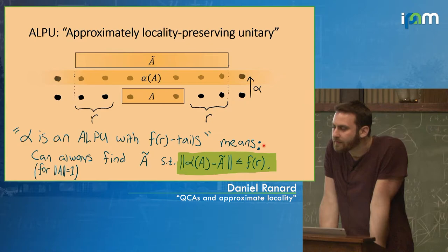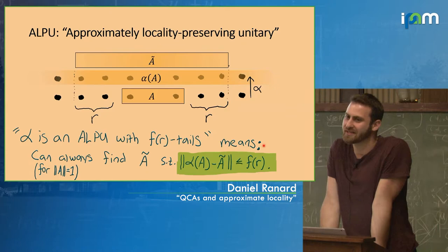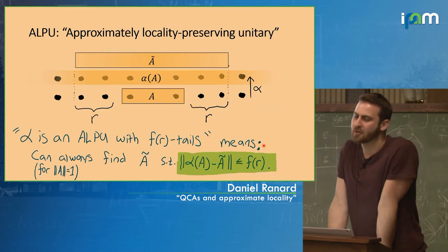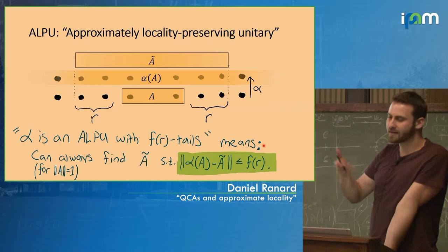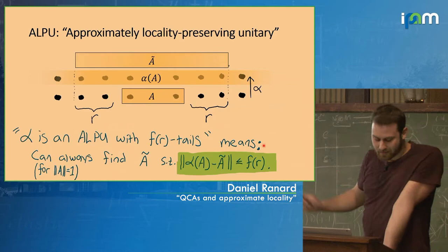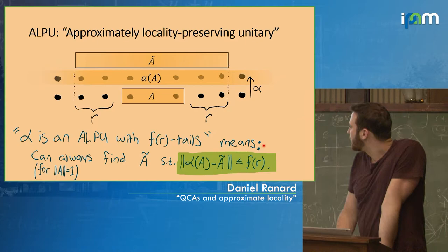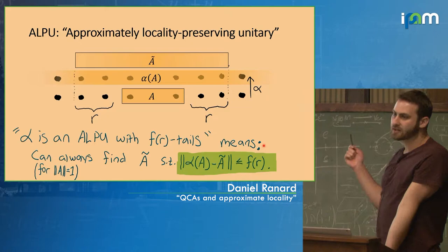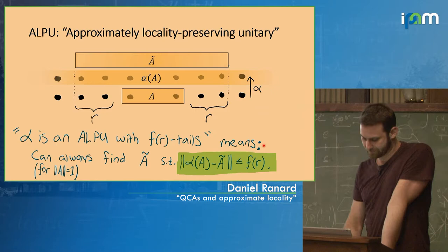Audience question: can you remind us what operator norm is? In finite dimensions it would be the largest singular value. The definition that works in infinite dimensions — which also works in finite dimensions — is the maximum Hilbert space norm of the operator acting on a unit vector. For each r you find an A-tilde such that no matter what r you choose, you should be able to find a good approximation to error f(r).